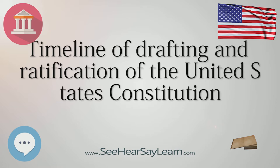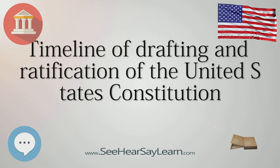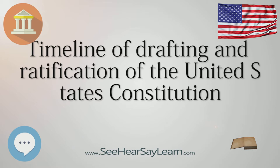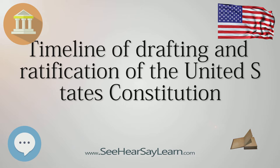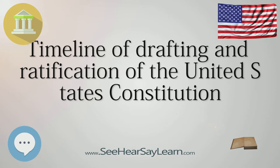1789. February 4: The Electoral College convenes. Presidential electors meet to cast their votes in their respective states. George Washington is unanimously elected to be the nation's first president and John Adams is elected its first vice president, receiving 34 of 69 votes cast. Only 10 of the 13 states cast electoral votes in this election.